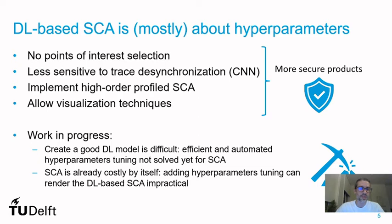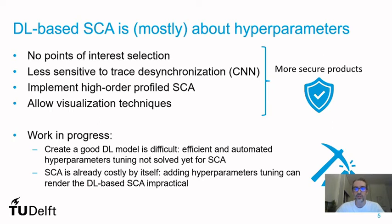There is work in progress on how to implement efficient and automated hyperparameter tuning for deep learning side-channel analysis, because we need to create a deep neural network and face many different hyperparameters. Selecting good hyperparameters is not an easy task, but many works are going in this direction and very soon we should have efficient solutions. Adding hyperparameter tuning to the side-channel scenario can render the attack impractical if we are not careful, because SCA by itself is already very costly and takes a lot of time.